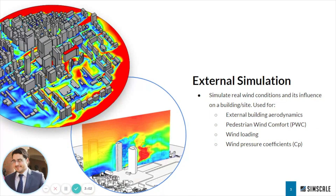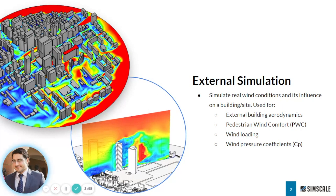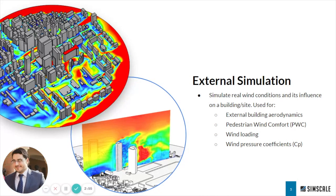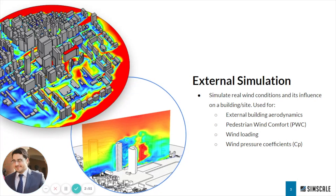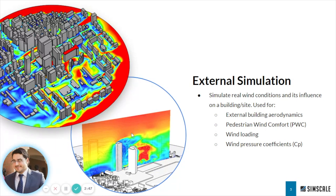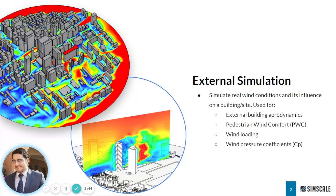Some of the types of simulation we can do: for example, external simulation — you might use it for looking at building aerodynamics, pedestrian wind comfort and safety, wind loading, and a closer look at wind pressure coefficients. You can do that from the very early concept massing stage through to design and planning level quality.